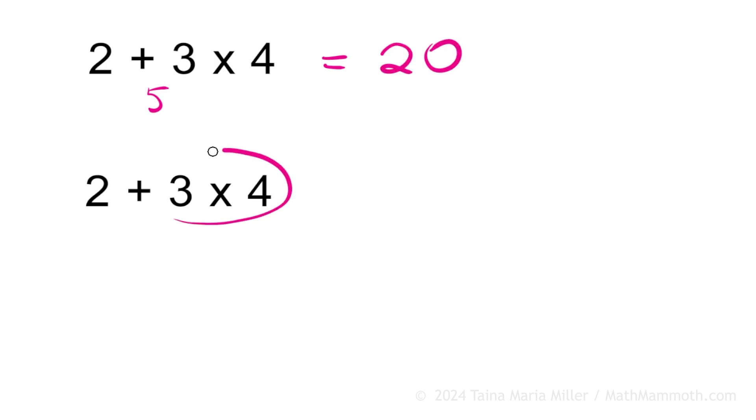Here we will do multiplication first. So 3 times 4, 3 groups of 4, it's 4 4 4, it's 12, 2 plus 12, 14. So now look, these two answers are different.